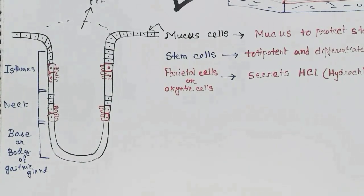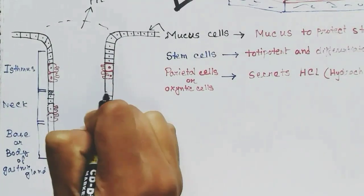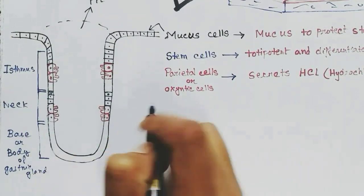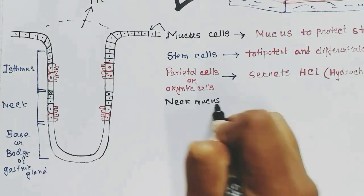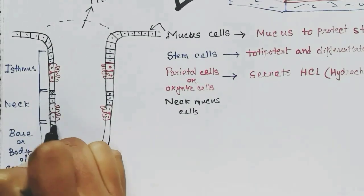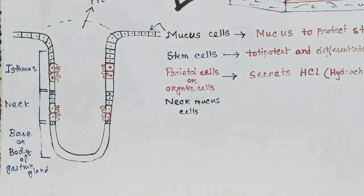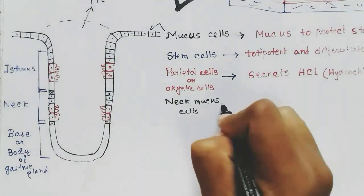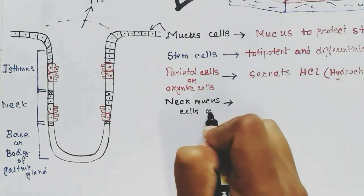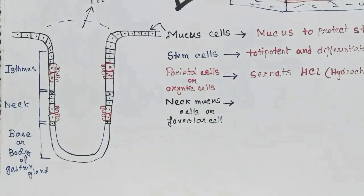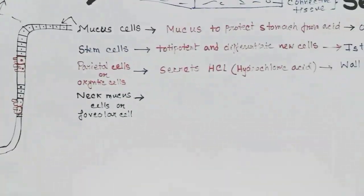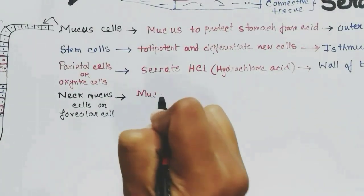At the neck region, some neck mucus cells are present. These cells are also called foveolar cells. Neck mucus cells also release mucus, but it is different from the epithelial mucus cells.